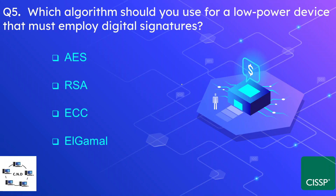Question number five: which algorithm should you use for a low-power device that must implement digital signatures? The options are AES, RSA, ECC, or ElGamal. The correct answer is ECC. ECC uses very low power and is a strong cryptographic algorithm, making it suitable for low-power devices.